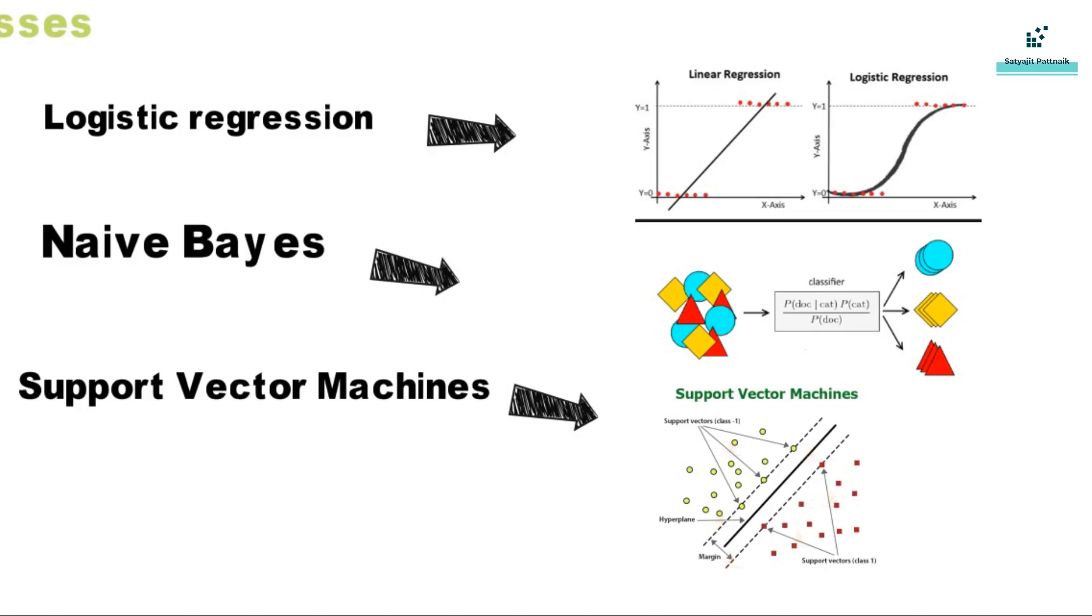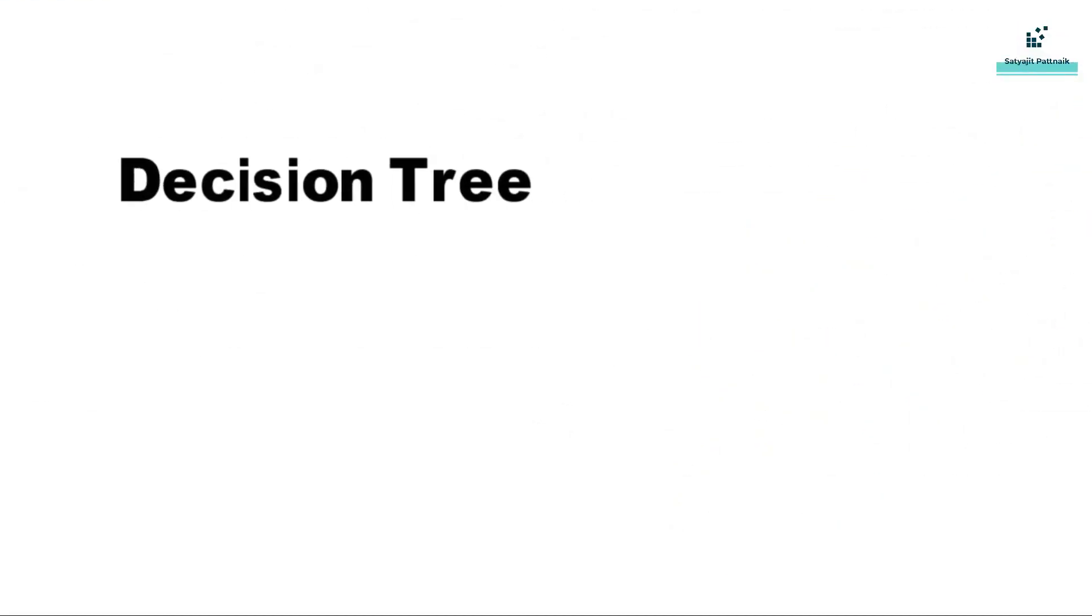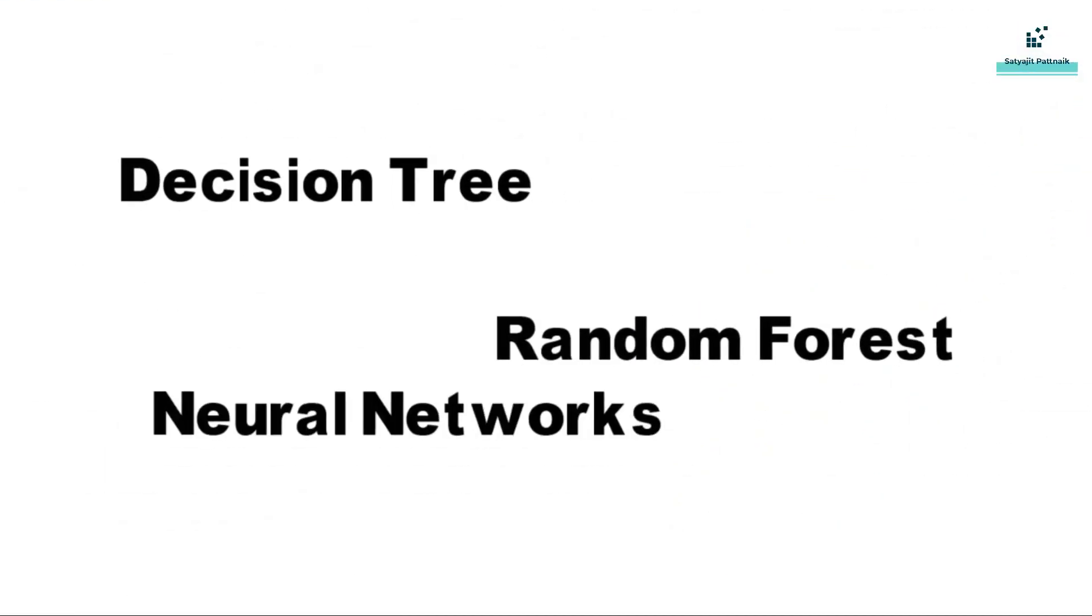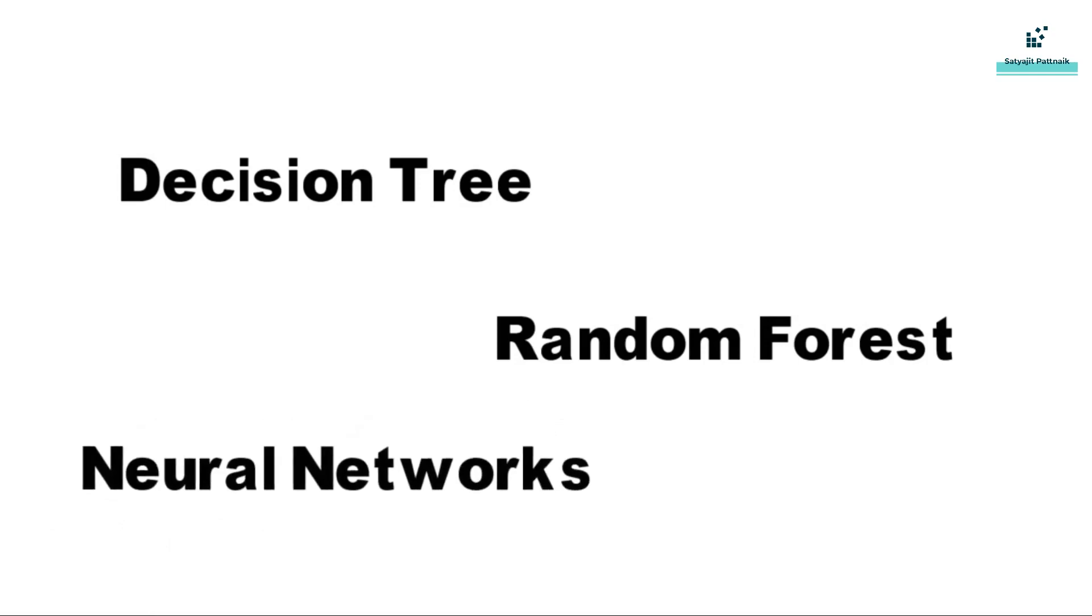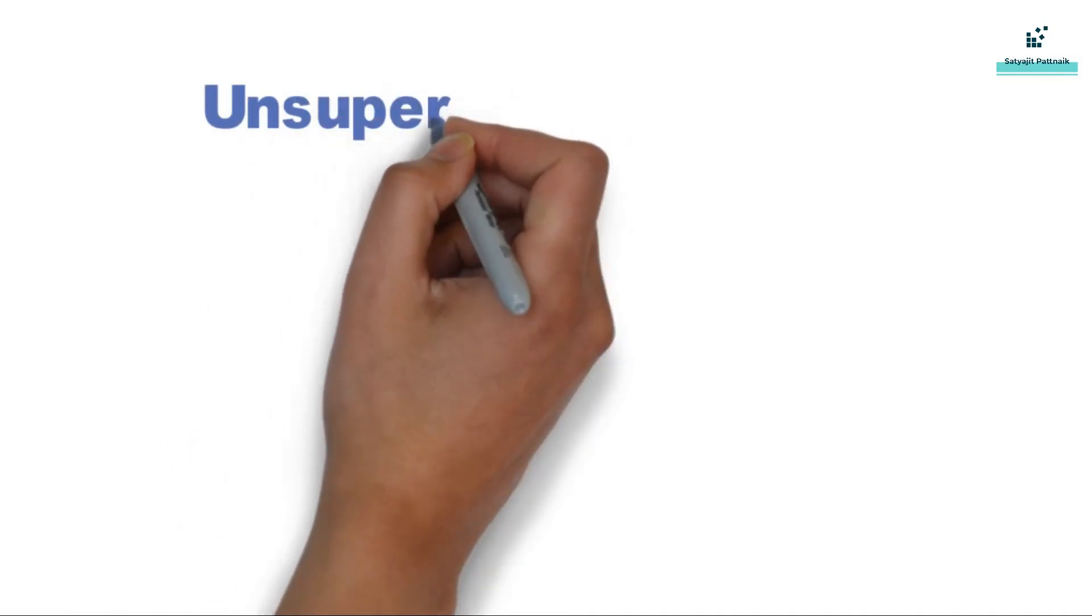Next we will be having decision tree, random forest, and neural networks, where the explanation is pretty similar to what we discussed in the regression part. The only difference here is the outputs are classes instead of a continuous number. Now next, let's jump over to unsupervised learning.